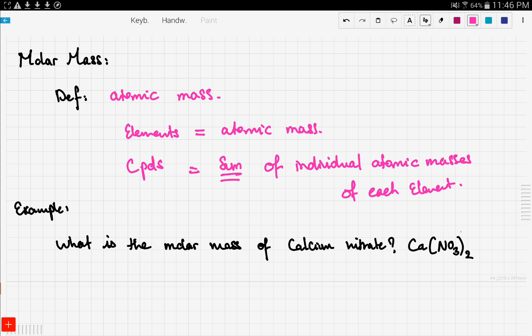For compounds, it's equal to the sum of individual atomic masses of each element. Now molar mass is denoted by big M not small m. Small m is for the mass. The molar mass is different.